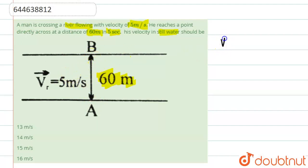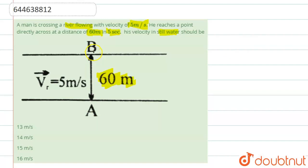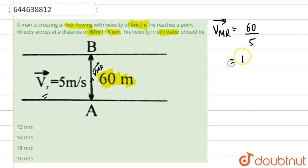The velocity of man with respect to river (VMR) is given by 60 divided by 5. The man starts from A and reaches point B, but there is also a river velocity, so he can't go straight. He has to aim his velocity in a somewhat angled direction to actually reach point B. So VMR equals distance divided by time: 60 meters divided by 5 seconds, which gives 12 meters per second.